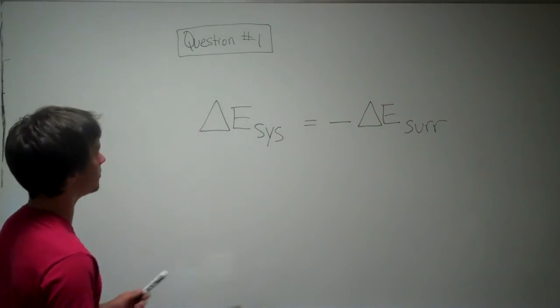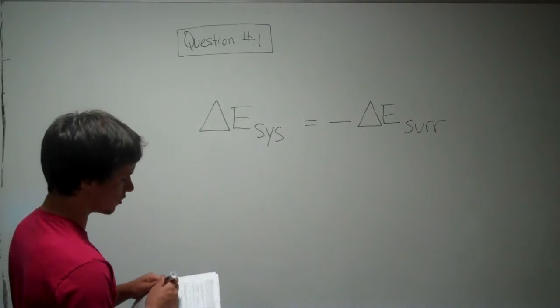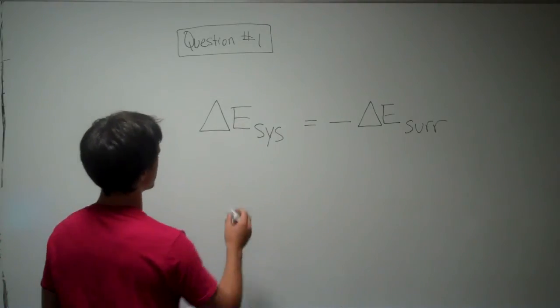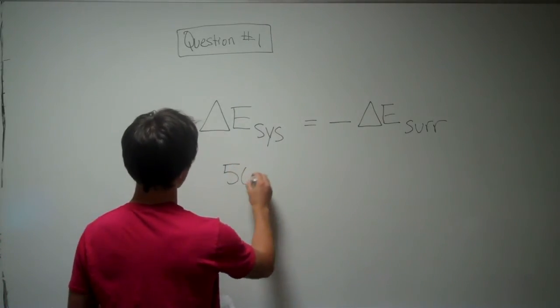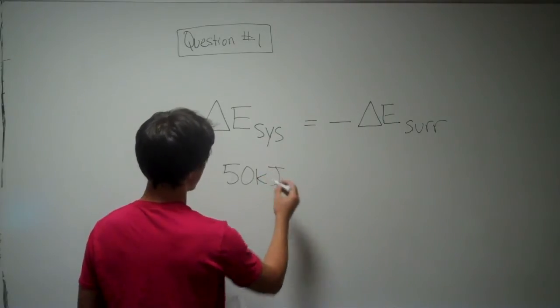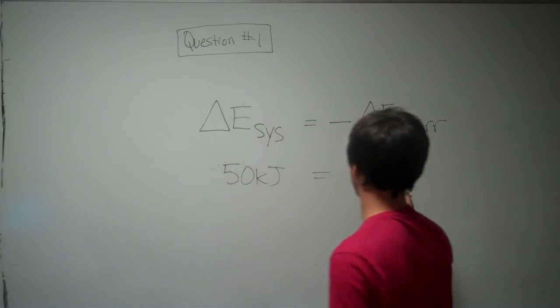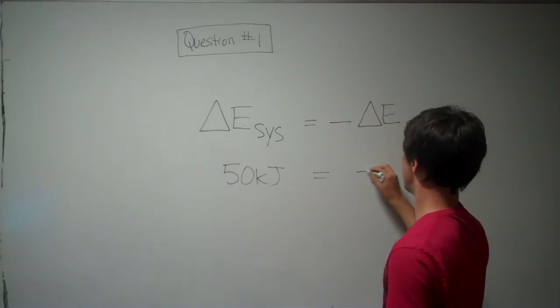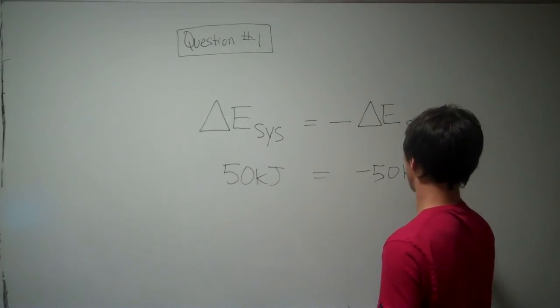So they say the system gains 50 kilojoules of energy during a process. So the change in the energy of the surroundings is negative 50 kilojoules.